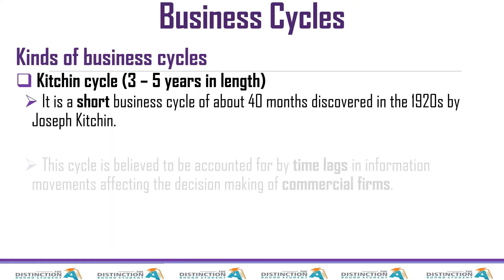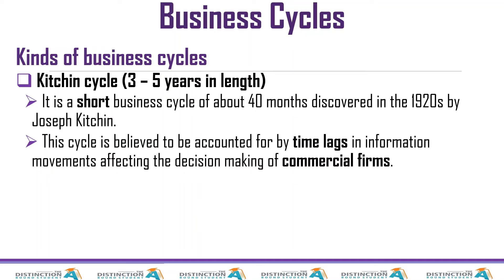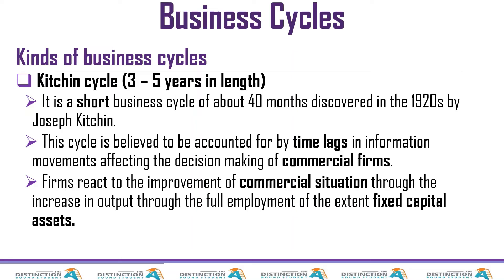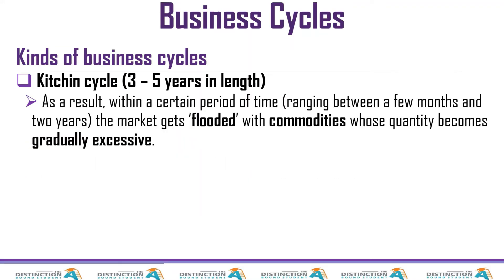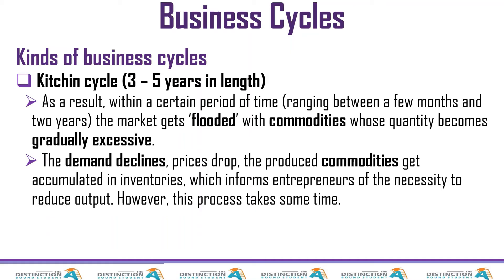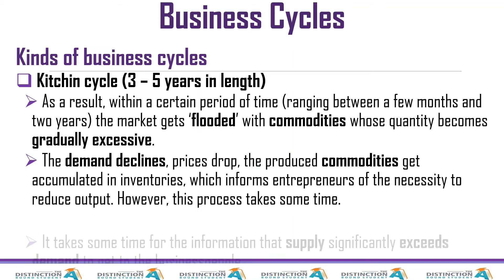The Kitchen cycle is believed to be accounted for by time lags in information movements affecting the decision-making of commercial firms. Firms react to an improvement in the commercial situation by increasing output through full employment of existing fixed capital assets. As a result, within a period ranging from a few months to two years, the market gets flooded with commodities whose quantities become gradually excessive, demand declines, and prices drop.